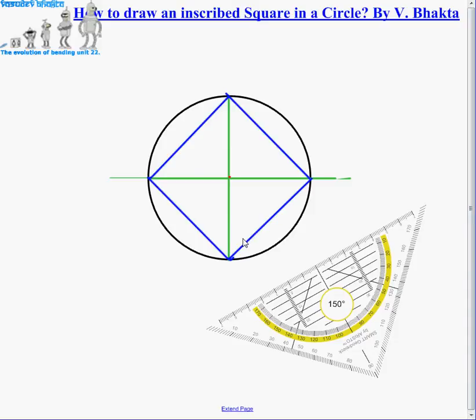You can draw other polygons, such as a triangle, pentagon, hexagon, within a circle using similar concepts, just a ruler and a compass.